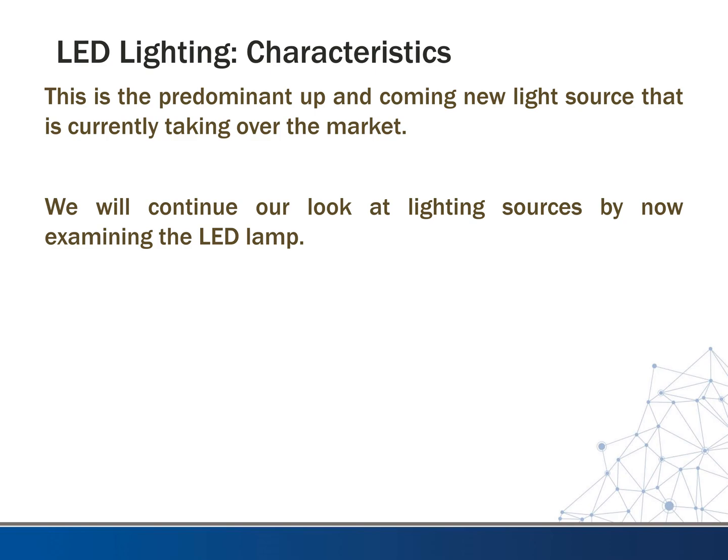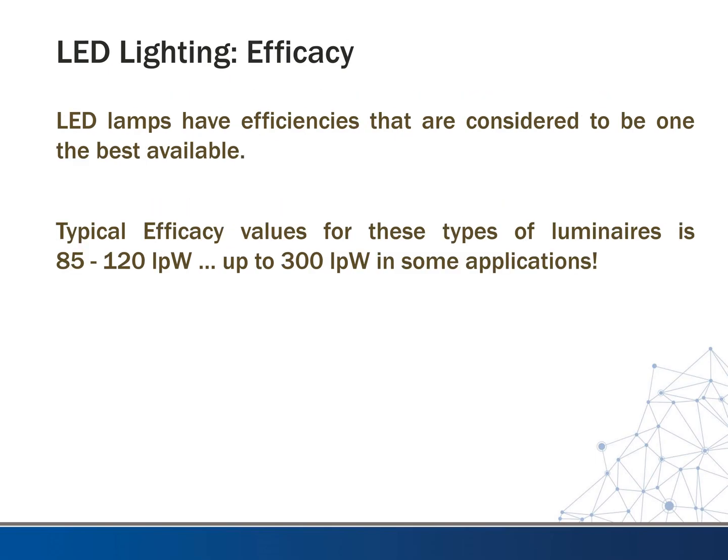LED light is the predominant up-and-coming new light source that is currently taking over the market in pretty much every area. We want to continue our look at this lighting source and some of its characteristics. As far as efficacy, LED lamps have efficiencies considered to be some of the best available — generally in the 85 to 120 lumens per watt range, but special types can reach up near 300 lumens per watt for some applications.